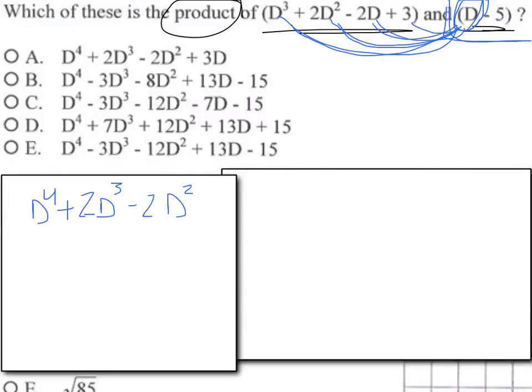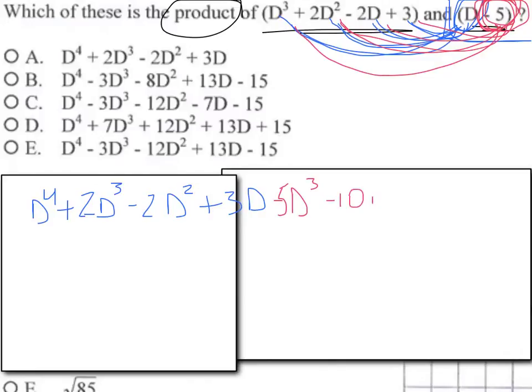Now I need to do the other one: negative 5. I'm going to multiply it by everything in there. Negative 5 times D³ is negative 5D³. Next one: 2D² times negative 5 is negative 10D². Now you see it's changing the numbers but not the exponents, whereas the other one changed the variable with the exponent and not the number.